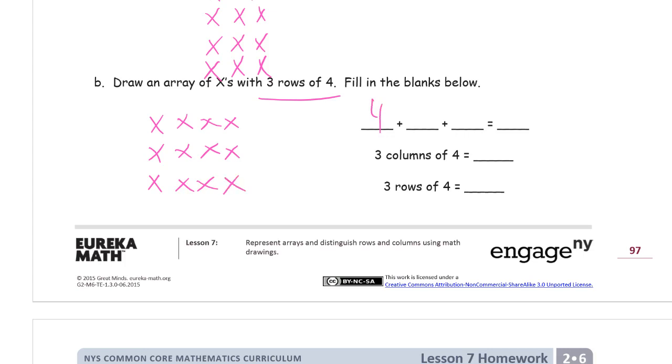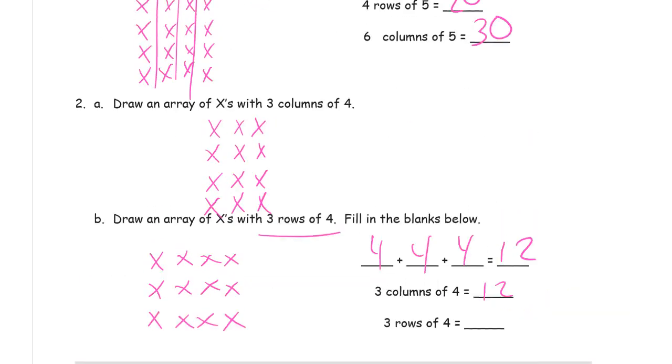And so I have fours and there's three of them. There's twelve. Three columns of four would be twelve. That's what we had up here. You don't need to draw that arrow.